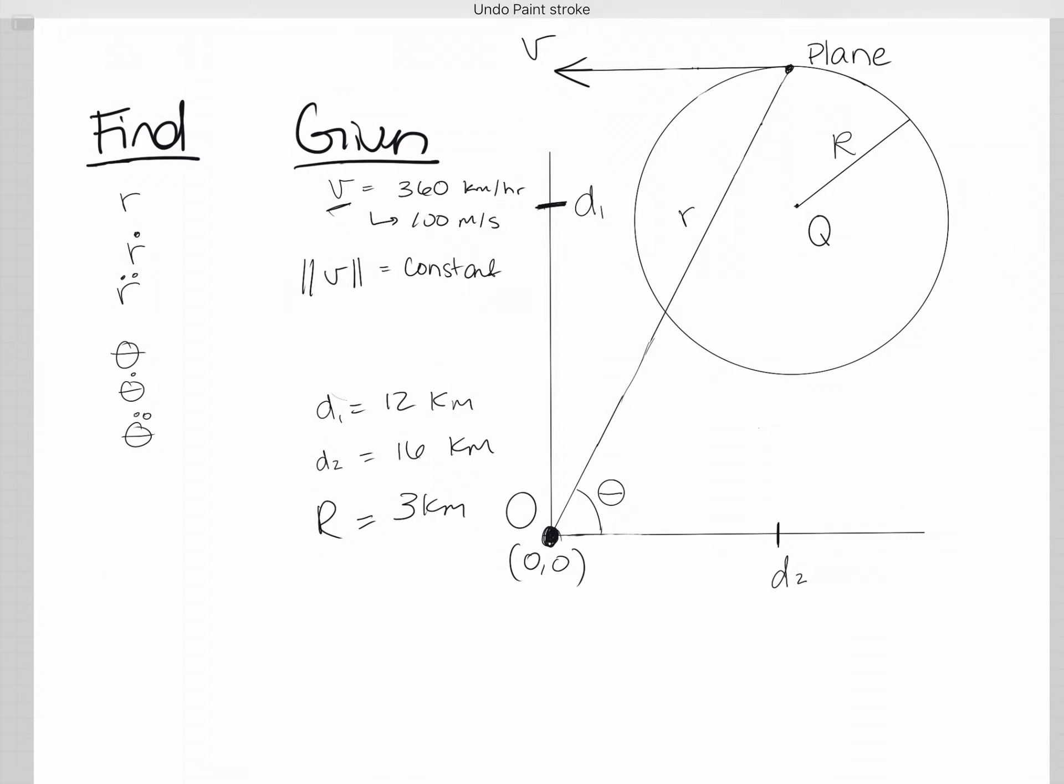That means that this does not change, and anytime you're looking at a circle, start thinking about the acceleration normal, which goes towards the center, and acceleration tangential, because there's a good chance that you're going to be looking at normal and tangential.